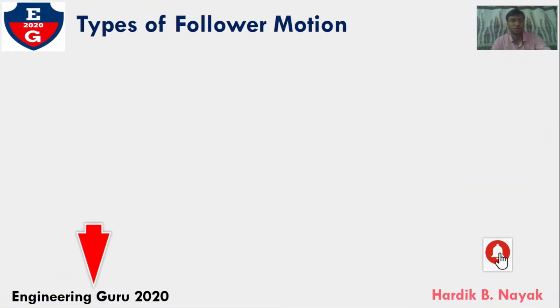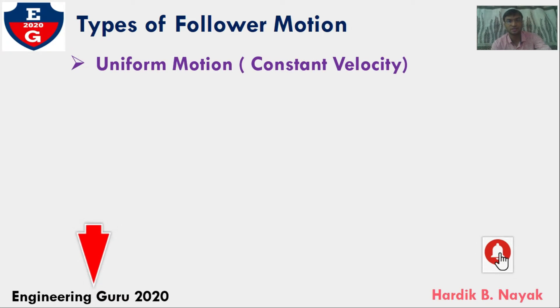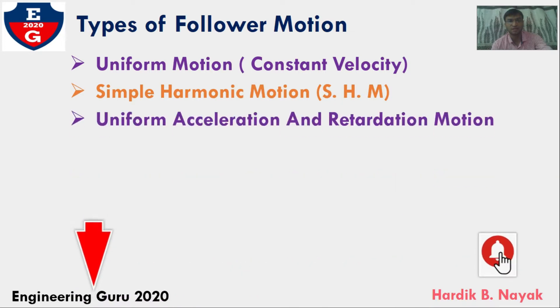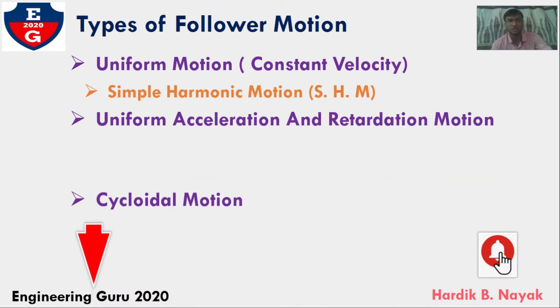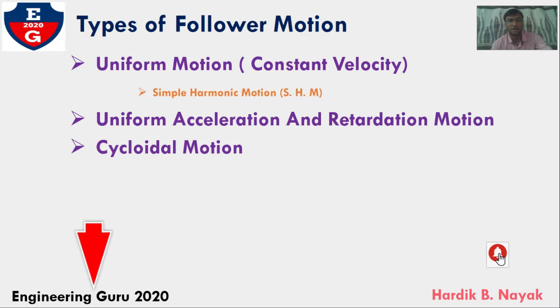The follower during its travel may have one of the following motions. First is uniform motion, also called constant velocity. Second, simple harmonic motion, also called SHM. Third, uniform acceleration and retardation motion. Fourth, cycloidal motion. Here we will learn displacement diagram for simple harmonic motion.